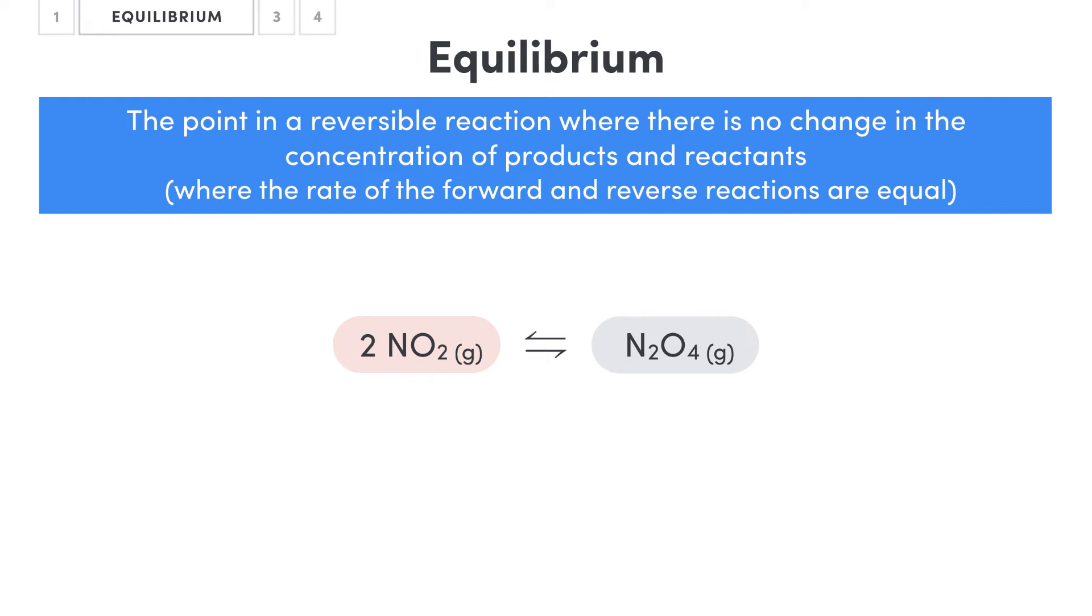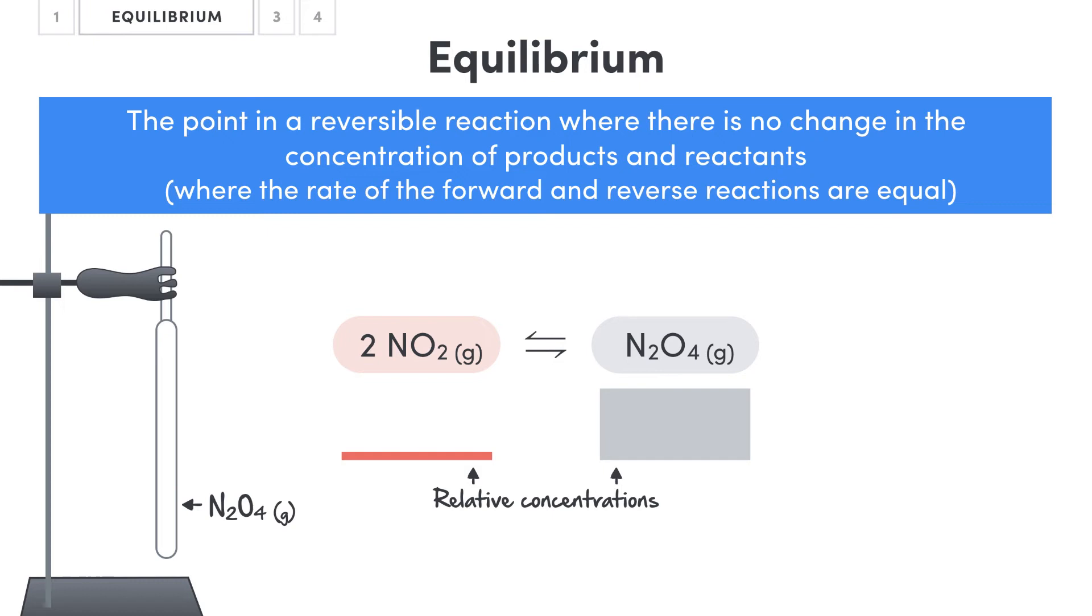So to illustrate an equilibrium, let's just say that we have a tube of dinitrogen tetroxide which is colorless. Since this reaction is reversible, it's going to be reacting in both the forward and the reverse direction. However, since we only currently have dinitrogen tetroxide, the reverse reaction is probably going to be happening faster than the forward reaction, meaning that it will generally appear to be proceeding in the reverse direction.